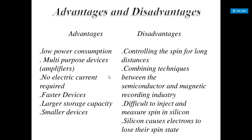Spintronics advantages and disadvantages. Advantages include: low power consumption, multi-purpose devices such as amplifiers, no electric current required, faster devices, larger storage capacity, and smaller size. On the other hand, disadvantages include: difficulty in controlling the spin over long distances, challenges in combining techniques between the semiconductor and magnetic recording industry, difficulty in injecting and measuring spin in silicon, and silicon causing electrons to lose their spin state.